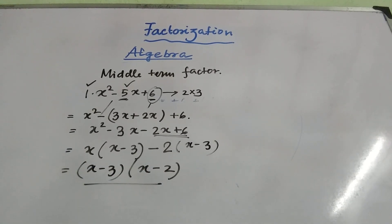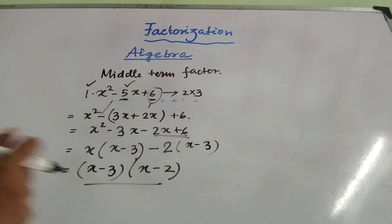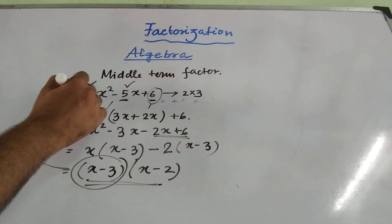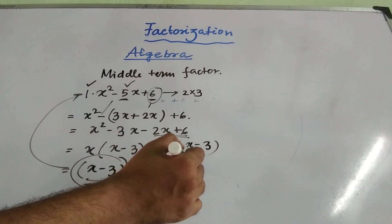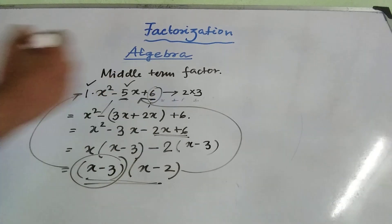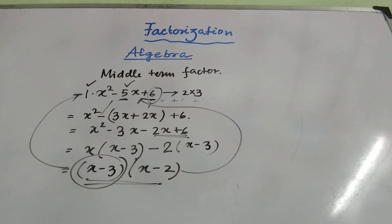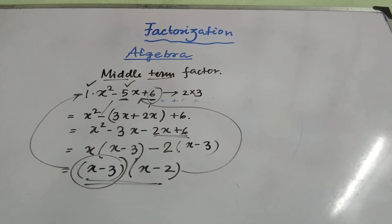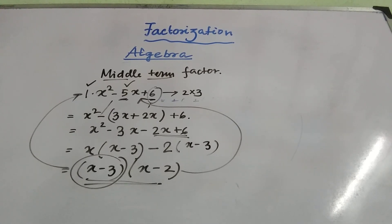The answer is the same as I showed by the previous method — expressing the expression by the difference of two squares. So (x - 3) is a factor and (x - 2) is also another factor of x² minus 5x plus 6. This is called the middle term factor method. In the next video, I will show you a more detailed process of middle term factorization, some complex examples, and other ways we can do factorization.